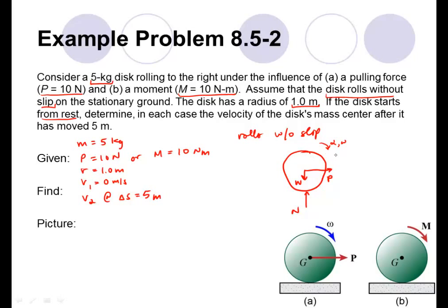The disc is going to roll to the right, accelerating to the right as generated by the force P. If we sum the moments about the mass center, the weight, normal force, and applied force P all pass through the mass center, so none of these forces will induce a moment causing the disc to rotate — causing this angular acceleration. The only force that can cause that is the friction force, and in order to induce clockwise acceleration, the friction force needs to be to the left.